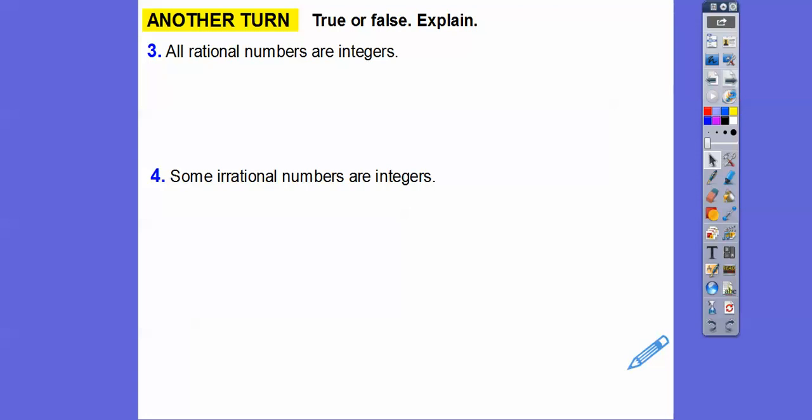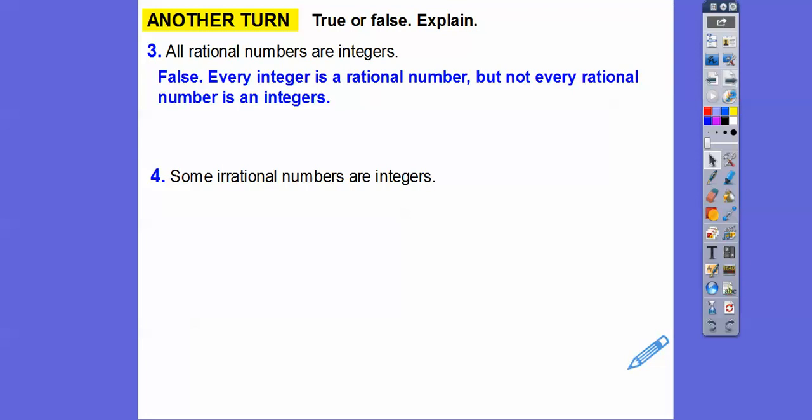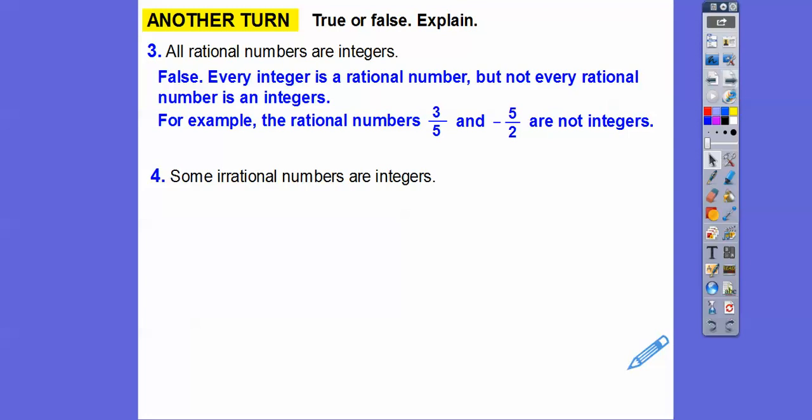So all rational numbers are integers — well, that's false because all fractions are not integers. Every integer is a rational number. Integers are a subset of rational numbers, but not the other way around — not every rational number is an integer. For example, 3 fifths or negative 5 halves are rational but they're not integers.